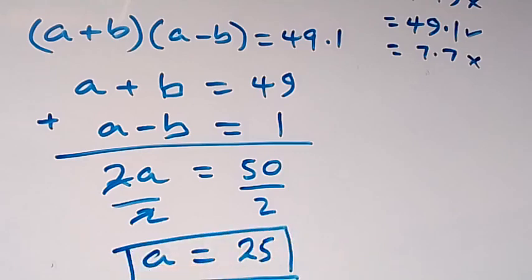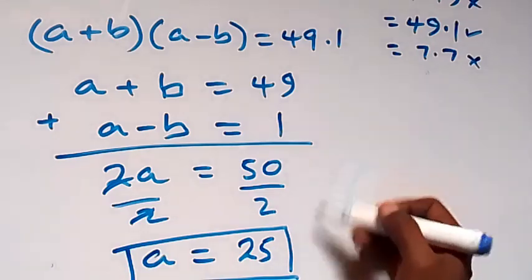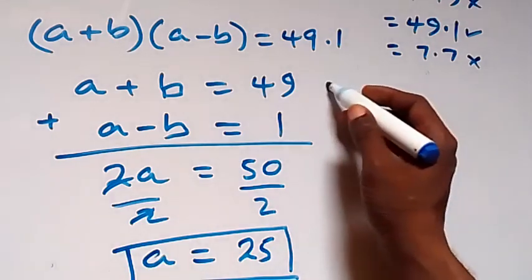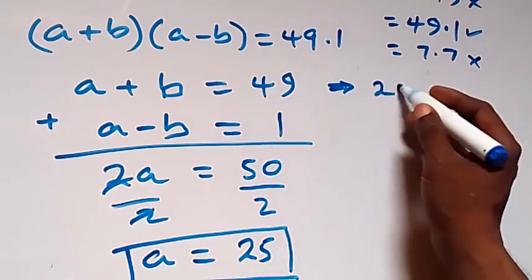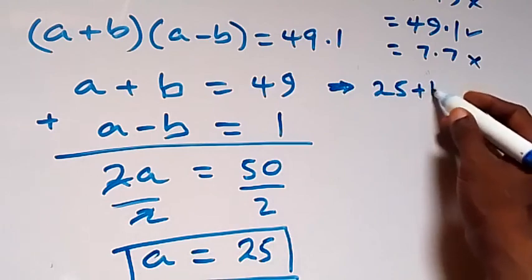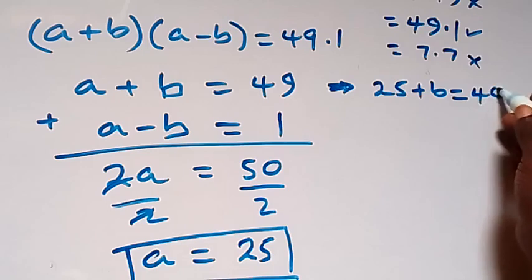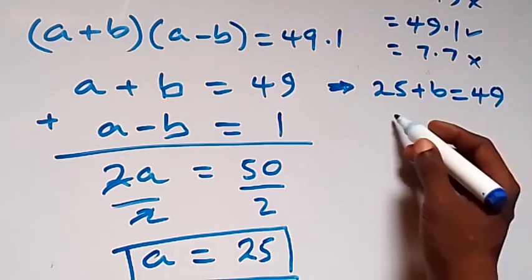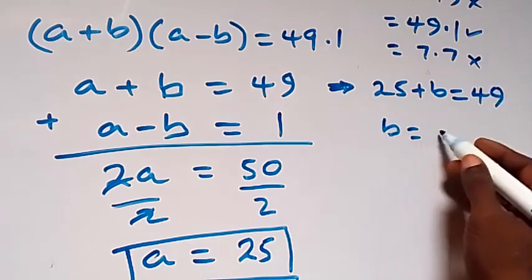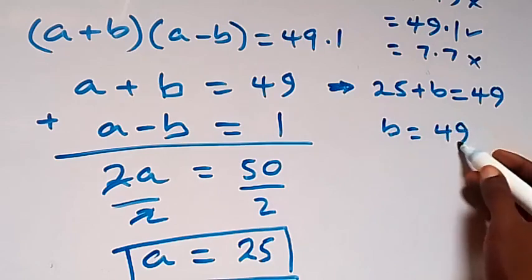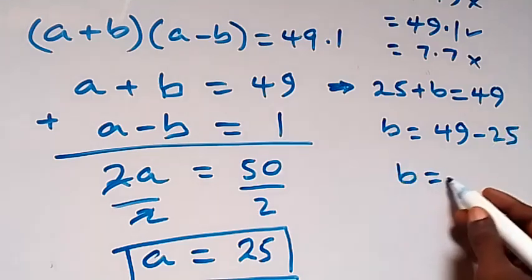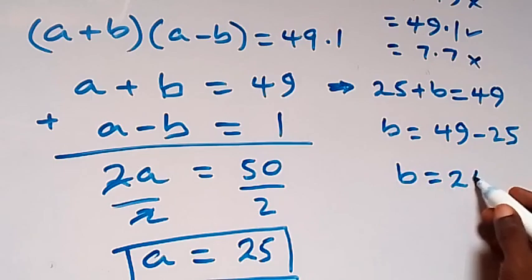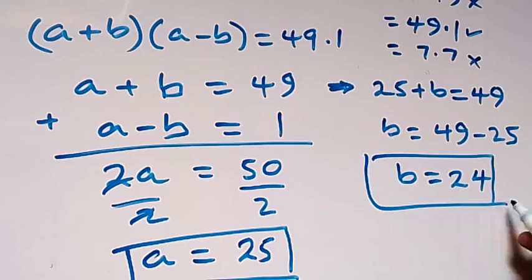Then we can use either of these two equations to get the value of b. So from this first equation here this becomes 25 plus b equals to 49. Subtract 25 and b here is equal to 24. So we have a to be 25 and b to be 24.